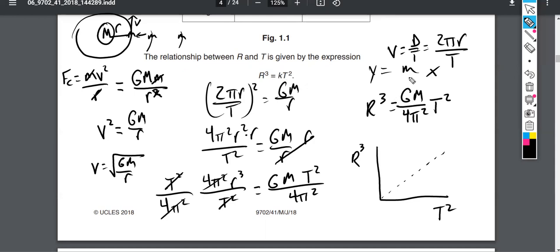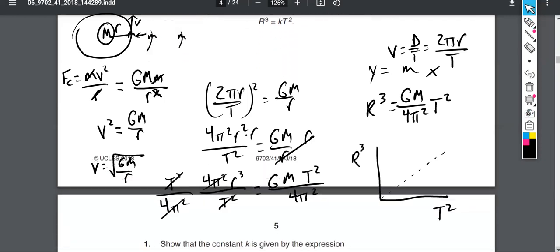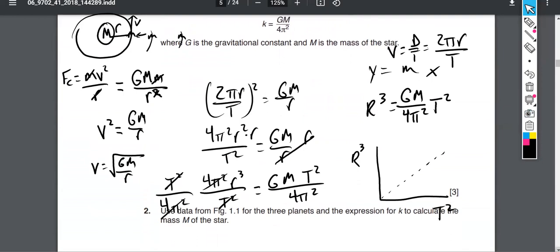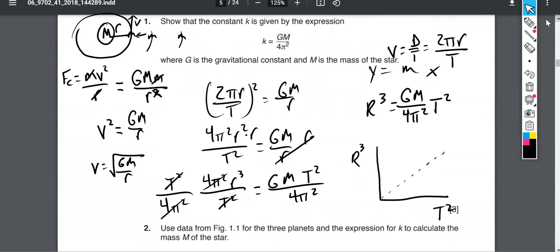That's what Kepler realized five centuries ago. But he never knew the value of his constant. He solved everything in terms of proportions and comparing it. Newton never even knew the value of his own constant, but was able to do some work with Kepler. As Newton famously said, he stood on the shoulders of giants like Galileo and like Kepler. So here we've shown that k is equal to this Gm over 4π². Exactly what we wanted to do to earn those three marks right there. So show that the constant k is equal to Gm over 4π². And that's exactly what we've got here, right?